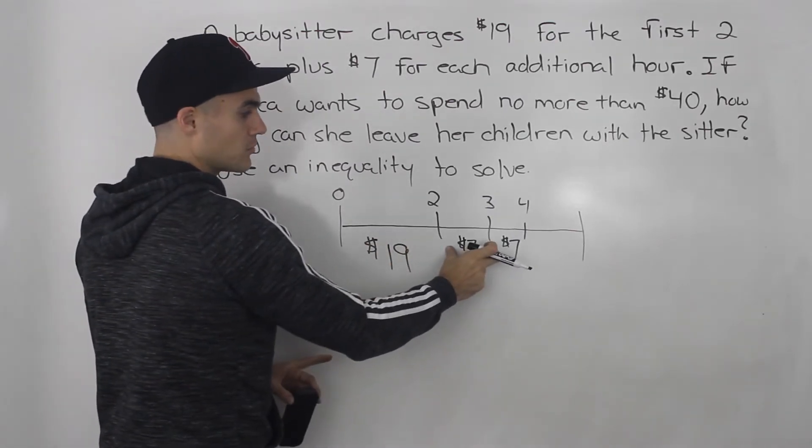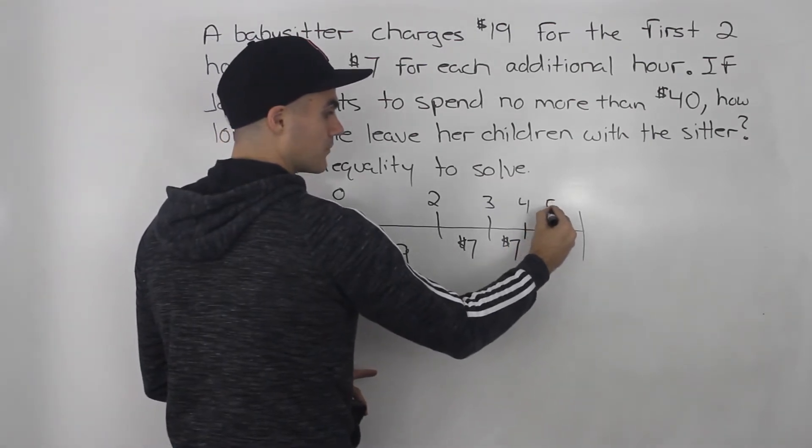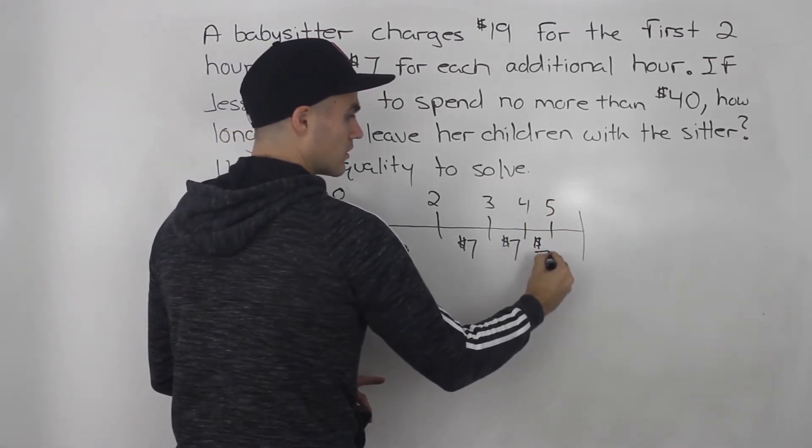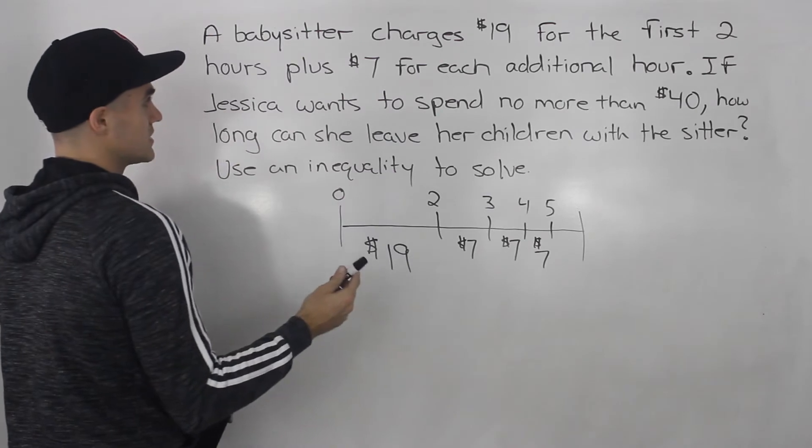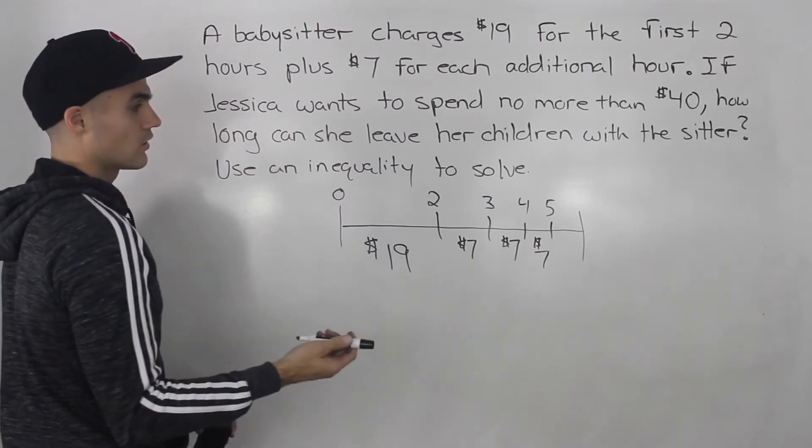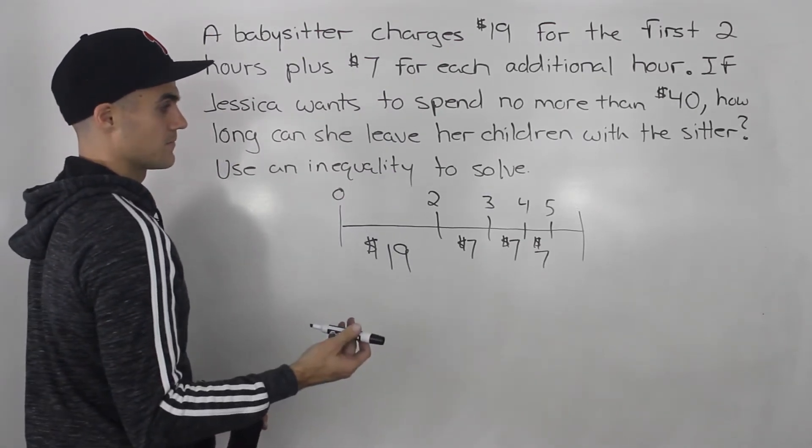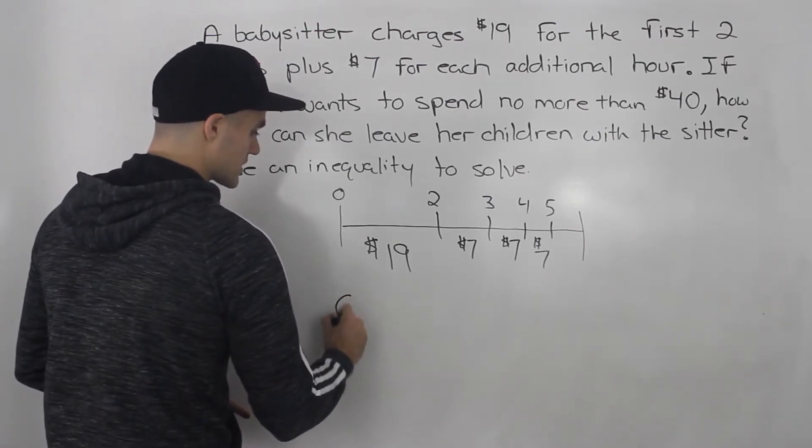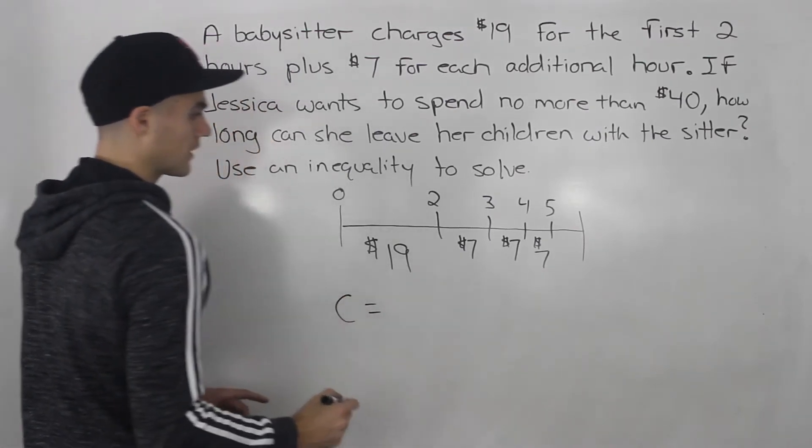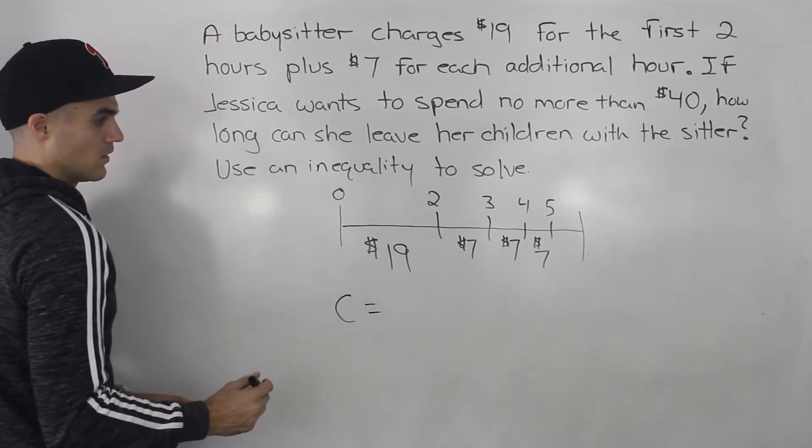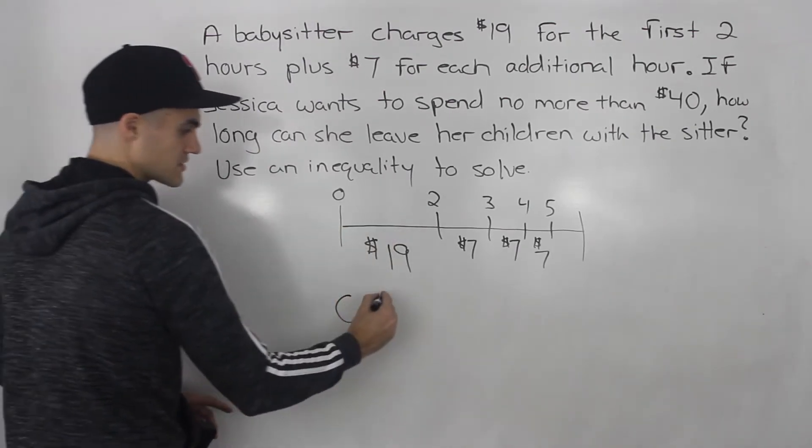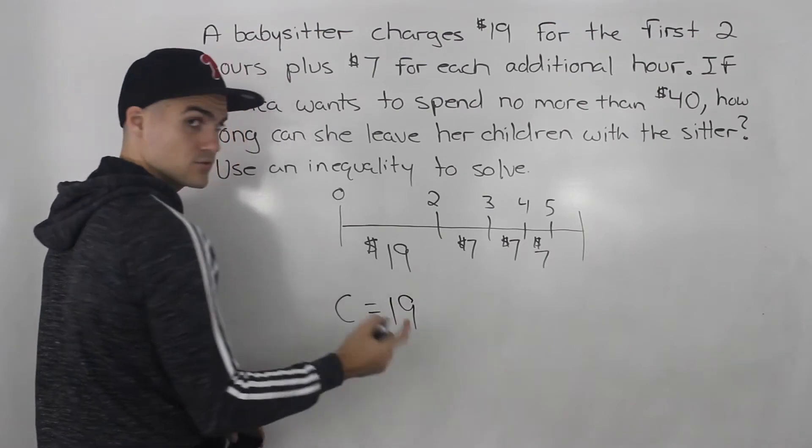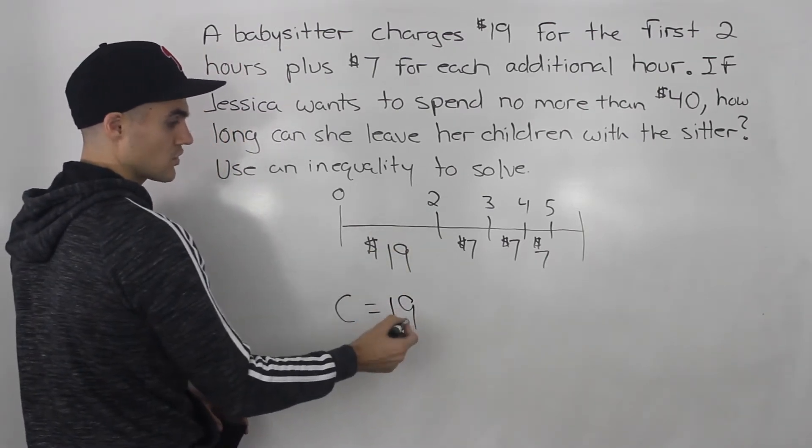Then we have a variable cost of $7 per hour. Jessica doesn't want to spend more than $40 with this babysitter. So what's this babysitter's charge going to be? Let's label that C. How can we make an equation for this? She has a fixed cost of $19 for the first two hours, so you're going to have to spend that for sure.